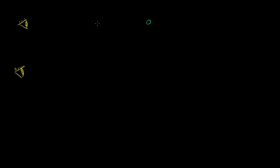In both scenarios, we're going to have some type of source of light. But in the first scenario, relative to me, the source of light will not be moving. While in the second scenario, the source of light will be moving at half the speed of light — an unimaginably fast speed. It has a velocity of one half light speed, away from me, who is the observer.